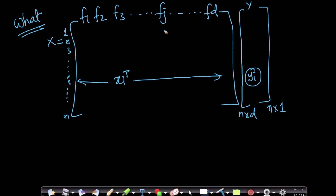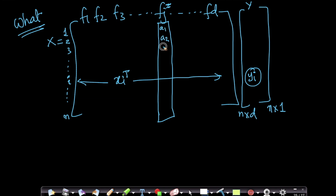What is column normalization? It means you take each column — each column corresponds to a feature. These features are like your sepal lengths, petal lengths, etc. in the iris data set. You take all the values corresponding to these features. Let's assume I have values a1, a2, a3 and so on, ai corresponding to the ith data point, up to an. So let's assume this is my feature j. I'll transform all the points in this column. This is called column normalization.